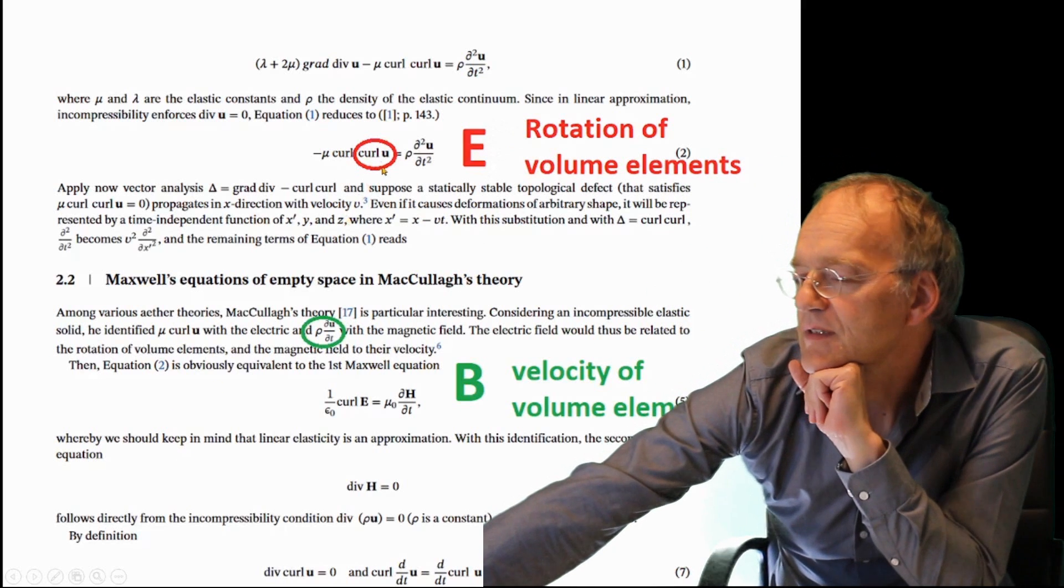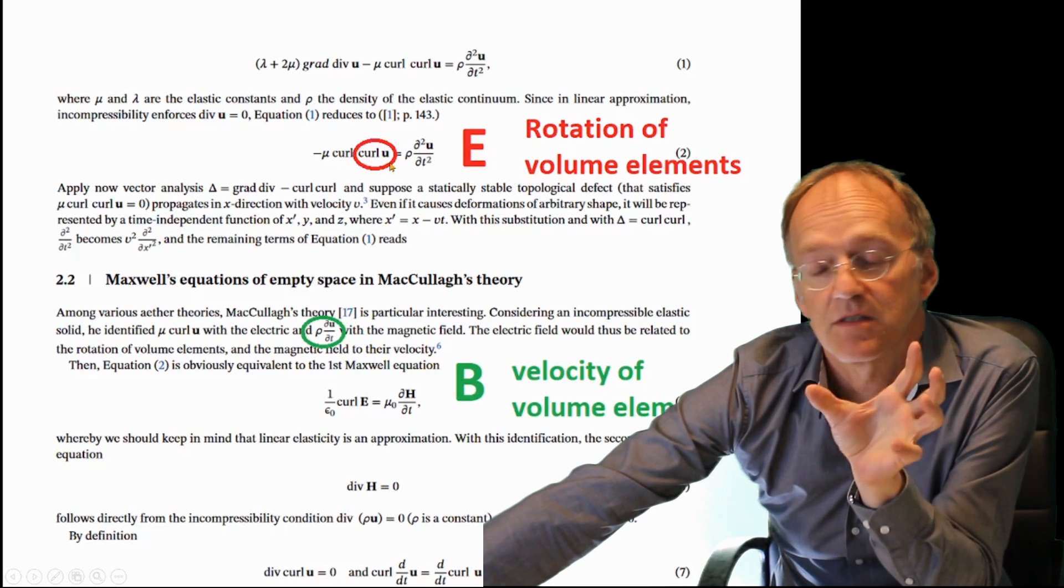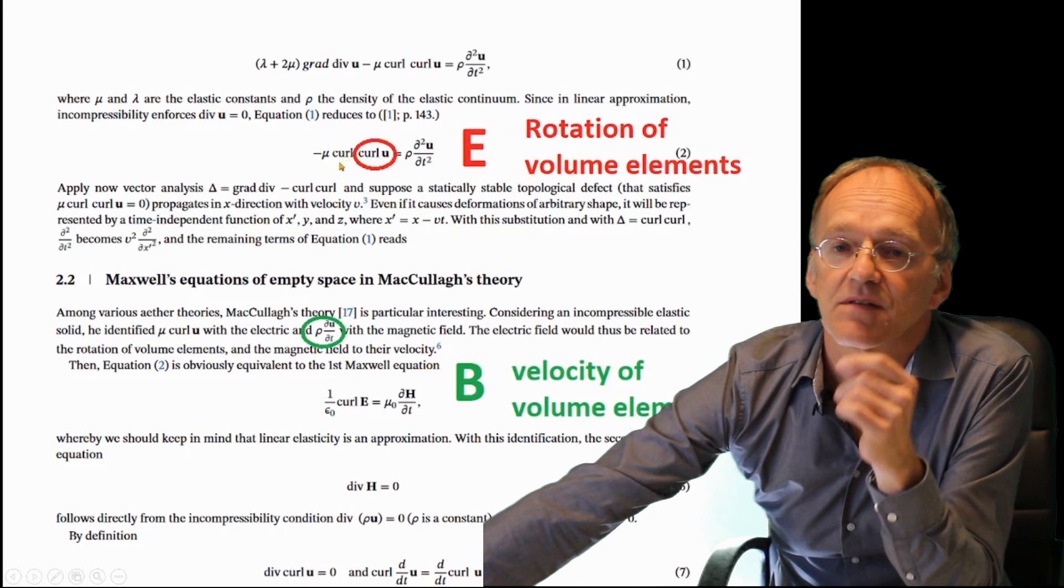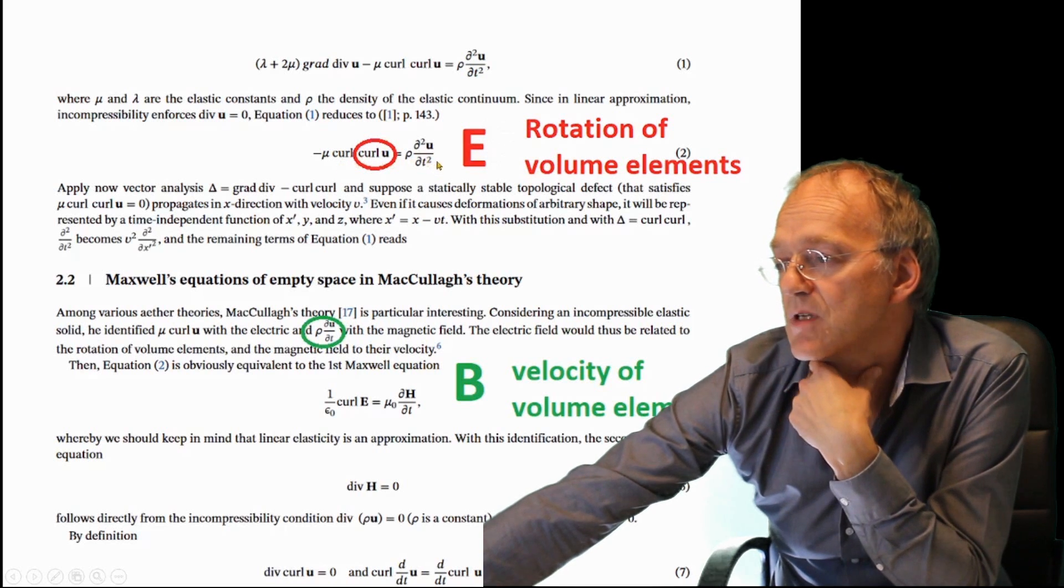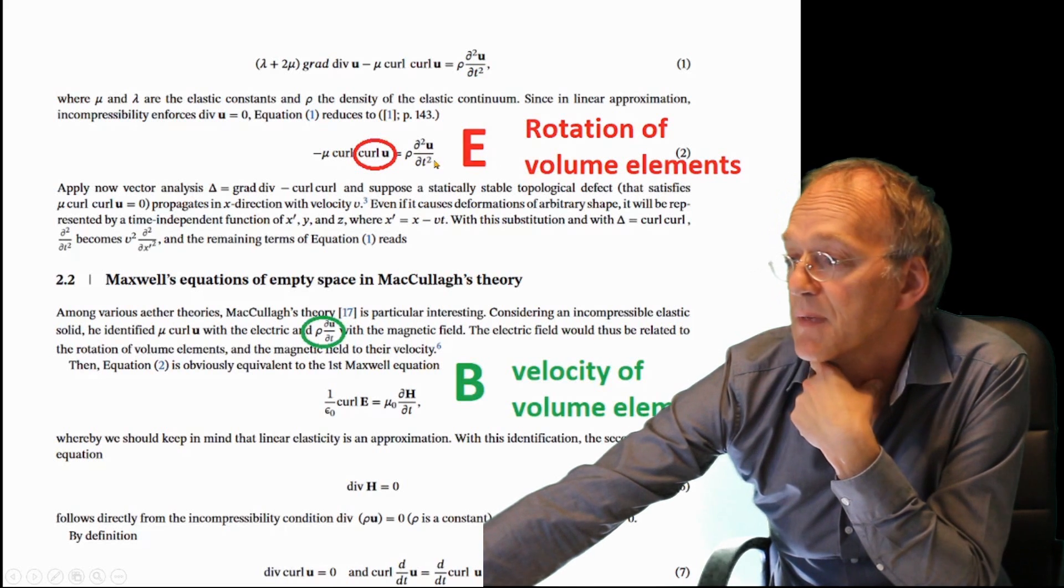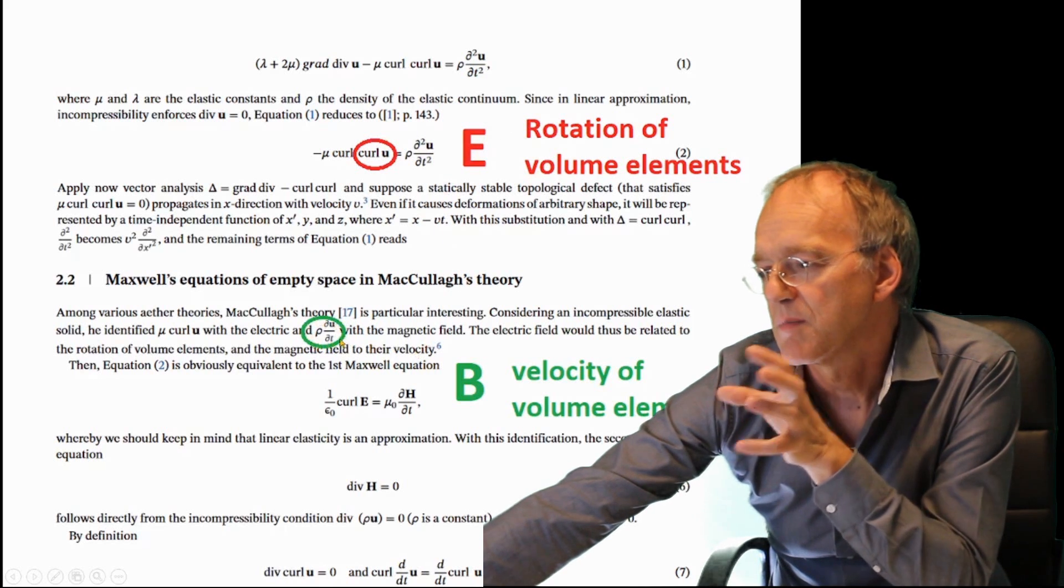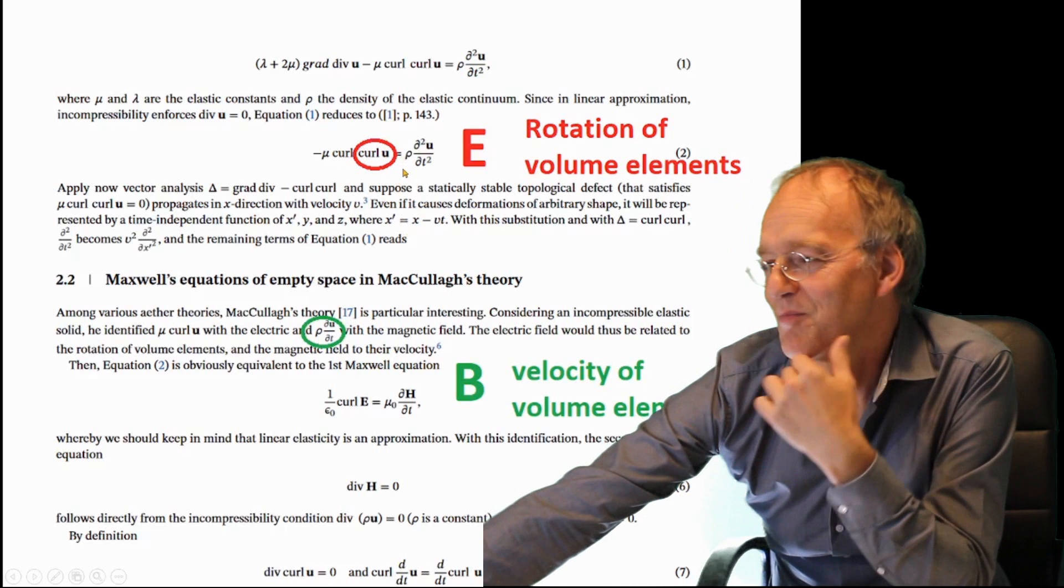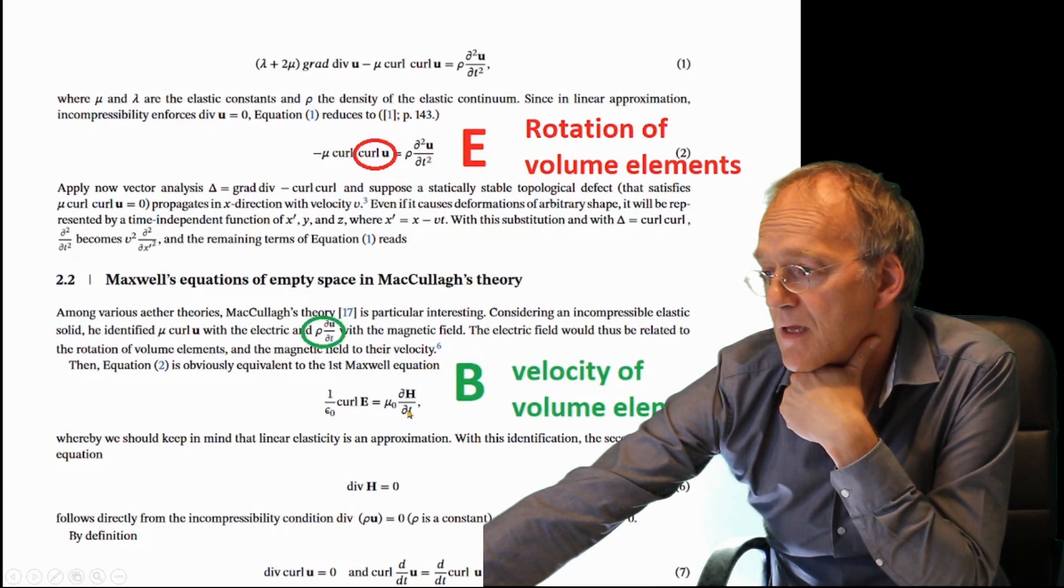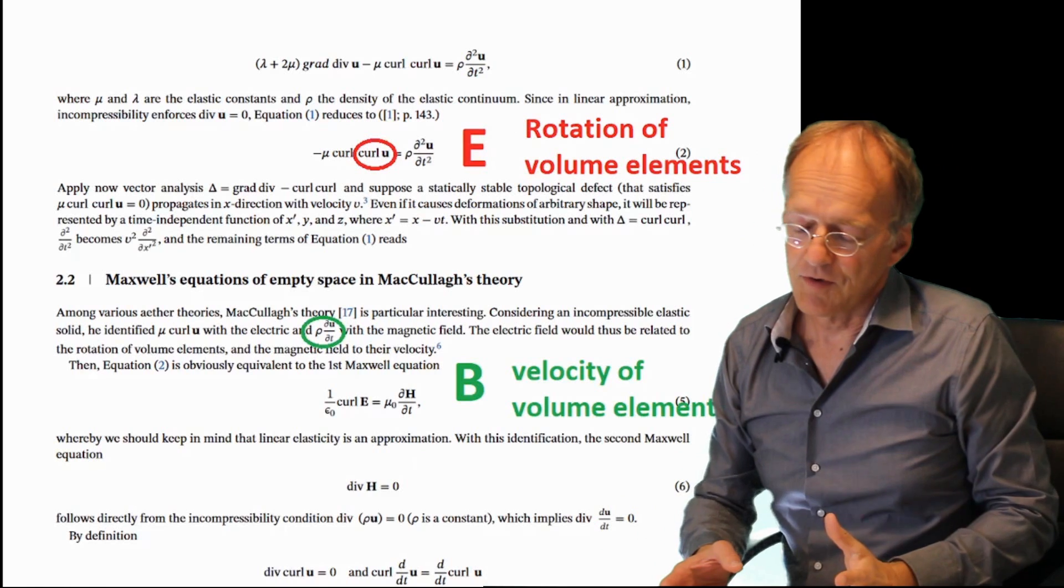The interesting thing here is that you almost get everything of Maxwell's theory, of Maxwell's equations here. If you, as I say, postulate curl u, the rotation of the displacement field is associated with the electric field. Then you have again curl, that means curl of the electric field is, as you know, related to the time derivative of the magnetic field. And you see here a double derivative, but the single derivative would be the magnetic field. So here we encounter Maxwell's first equation.